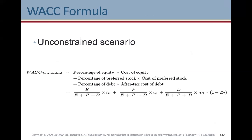This is the simple formula for the unconstrained scenario. WACC (unconstrained) equals the percentage of equity times the cost of equity, plus the percentage of preferred stock times the cost of preferred stock, plus the percentage of debt times the after-tax cost of debt. Each piece of the formula corresponds to a different type of capital. The first term — E over (E + P + D) times iE — is for determining the cost of equity.